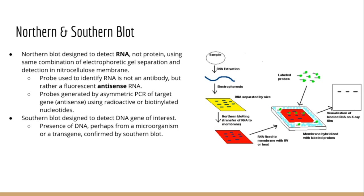A northern blot is designed to specifically detect RNA and can be used to quantify gene expression, similar to a qRT-PCR. A southern blot on the other hand is used to quantify DNA and can be used to identify the presence of a gene, perhaps from a microorganism or a virus. Often a southern blot is done after a PCR to confirm that the amplified gene is indeed the gene the original primers were designed towards — just because primers towards the HIV gene amplified a sequence doesn't necessarily prove it was HIV, so a southern blot with a highly sequence-specific probe can confirm the identity.